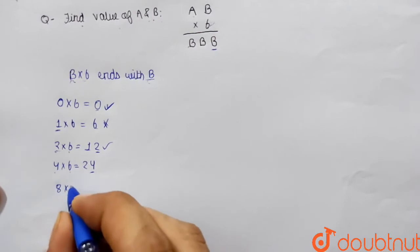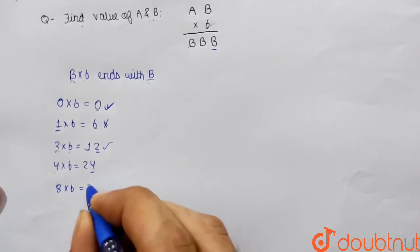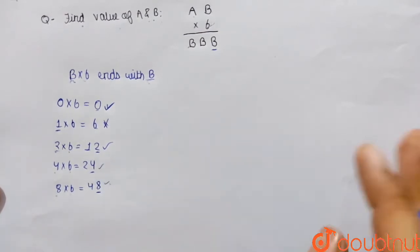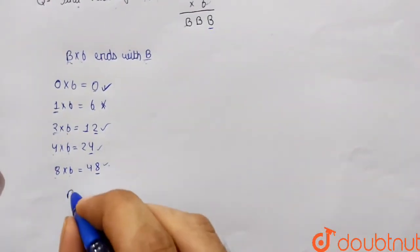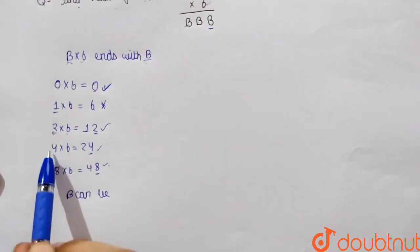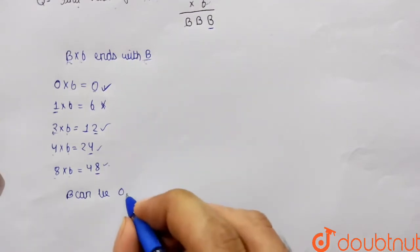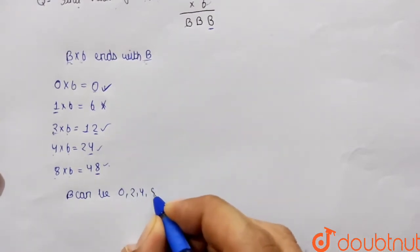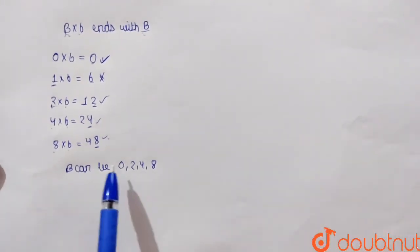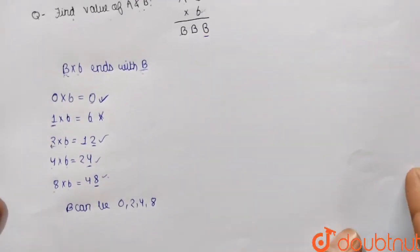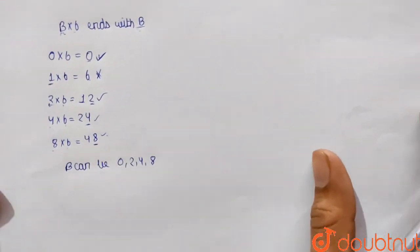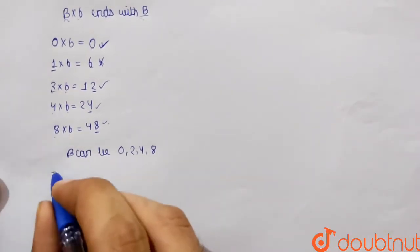Continuing the checks, the possible values of b are 0, 2, 4, and 8. We now need to check which of these values satisfies the complete condition: AB multiplied by 6 resulting in BBB.